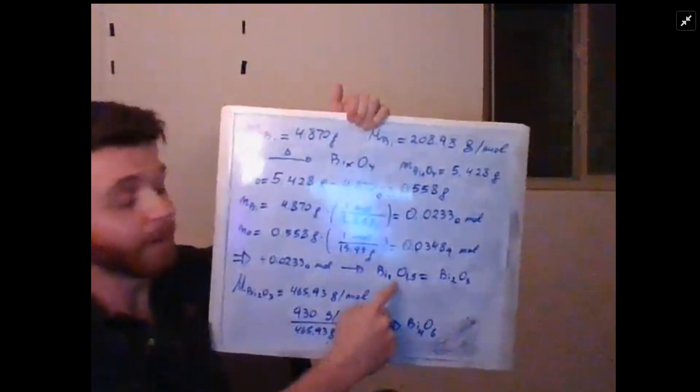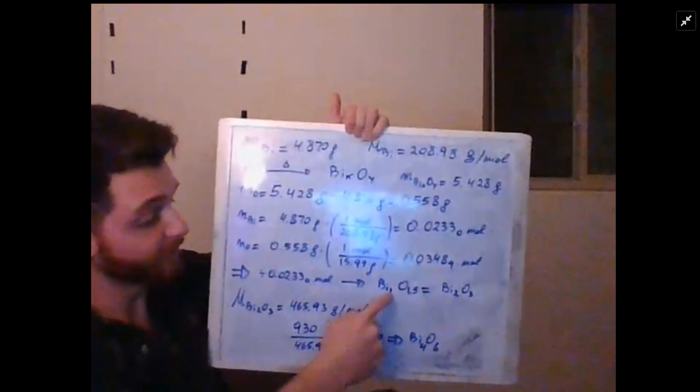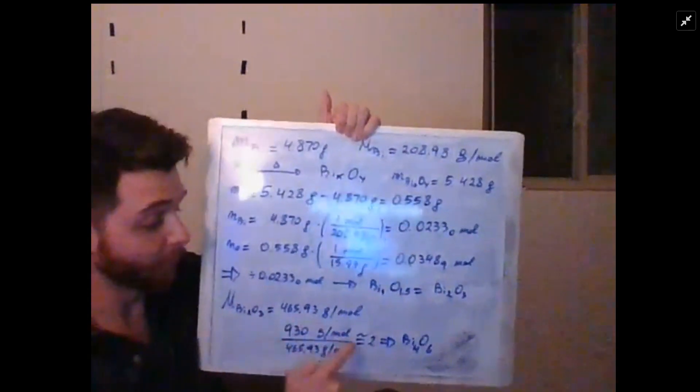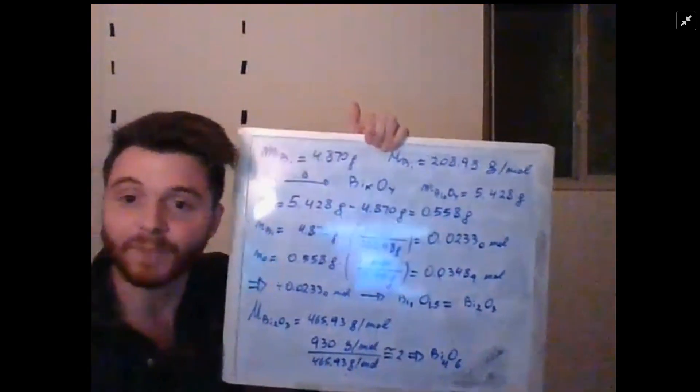If you didn't multiply this by two to make it an integer, what you would have gotten is a molar mass for this one that was half of this. So your value here would have been four, and you would have gotten exactly the same thing. Thank you for watching.